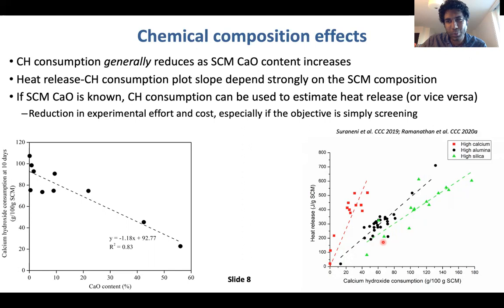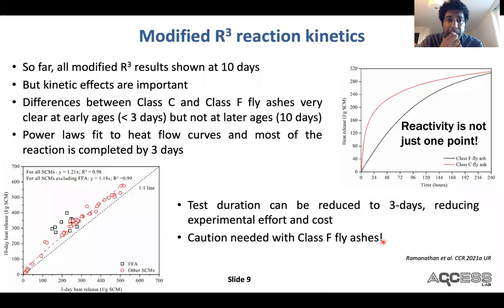If you know, for example, the material is high silicon, then you can use the calcium hydroxide consumption to estimate heat release. If your objective is simply screening, this is often good enough and can lead to a significant reduction in experimental effort and cost. So it's kind of important to measure both, but you can get away with one if you're clever about it.